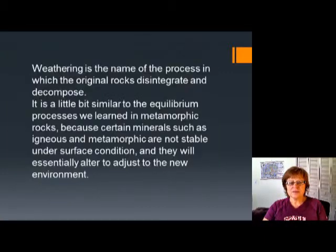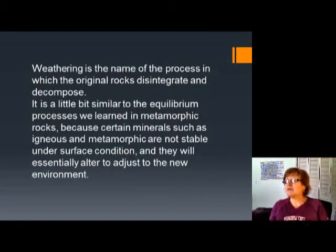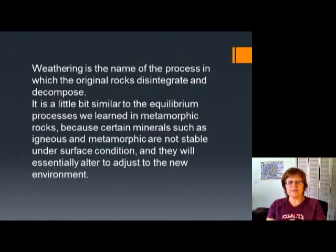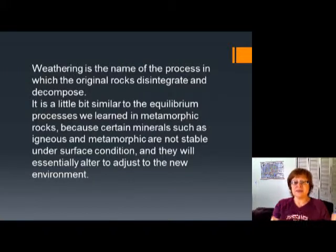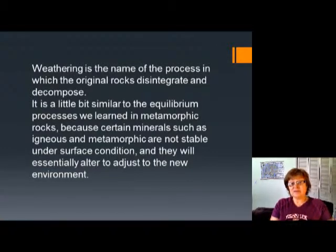This takes us to weathering, which is basically the name of the processes that change the composition of the original rock into something completely different — it decomposes the original rock. It is somewhat similar to the equilibrium process we learned in the metamorphic rock chapter, because at certain temperature and pressure conditions only certain minerals are stable. Most rocks do not form at STP — standard pressure-temperature, 1 atmosphere and 25°C — so they will slowly go through this equilibrium process and change into something more stable in that environment.